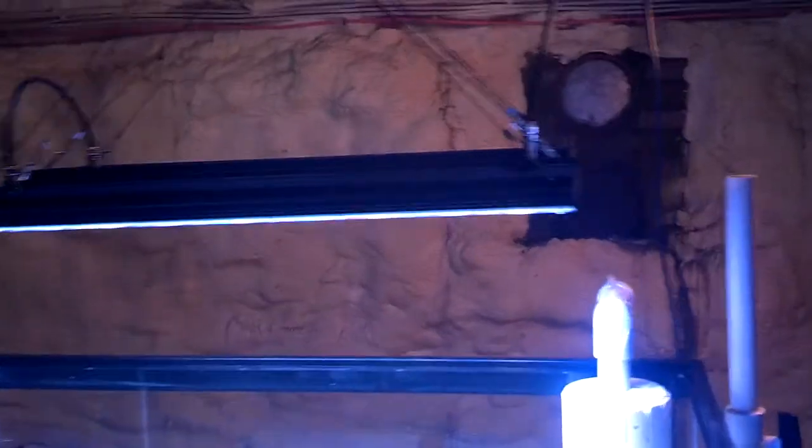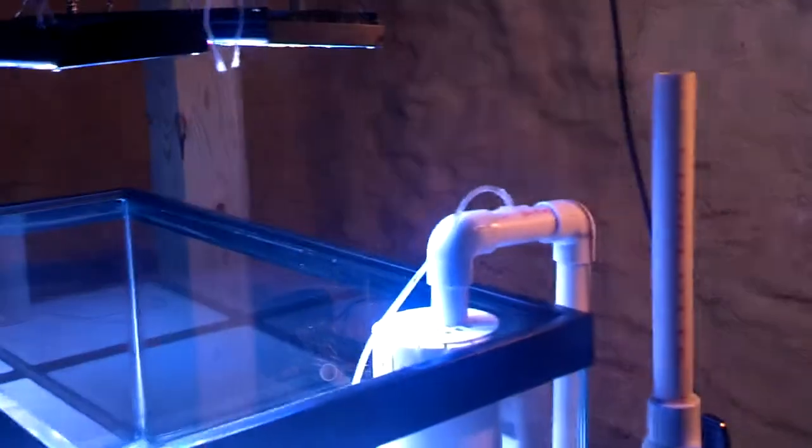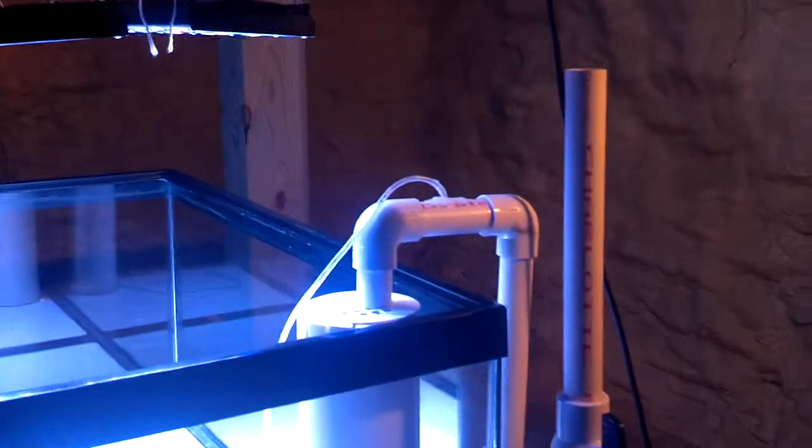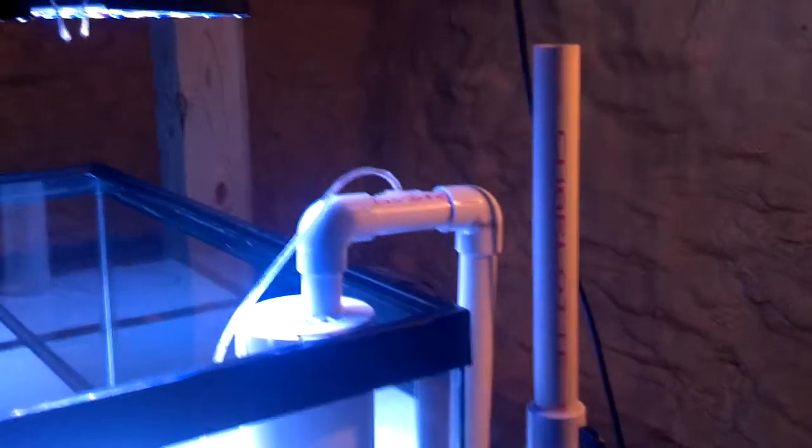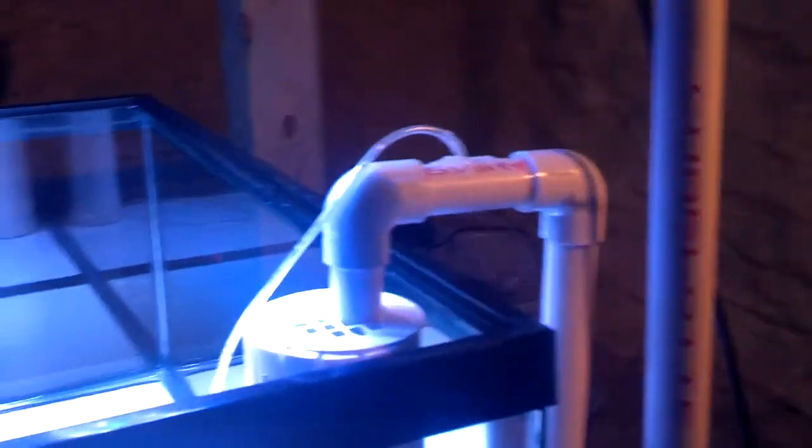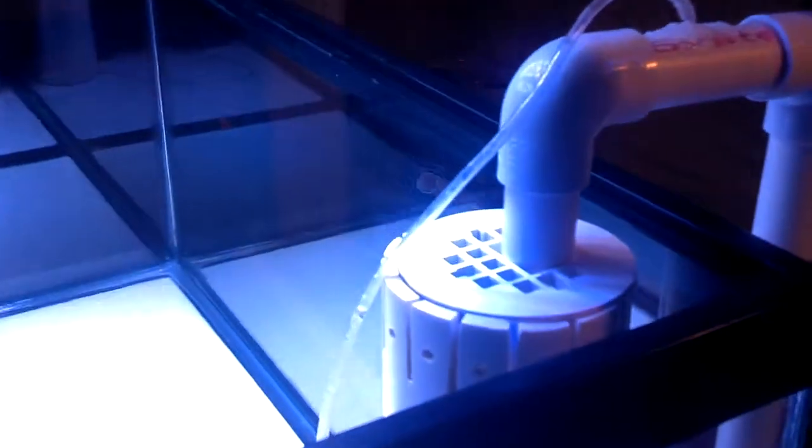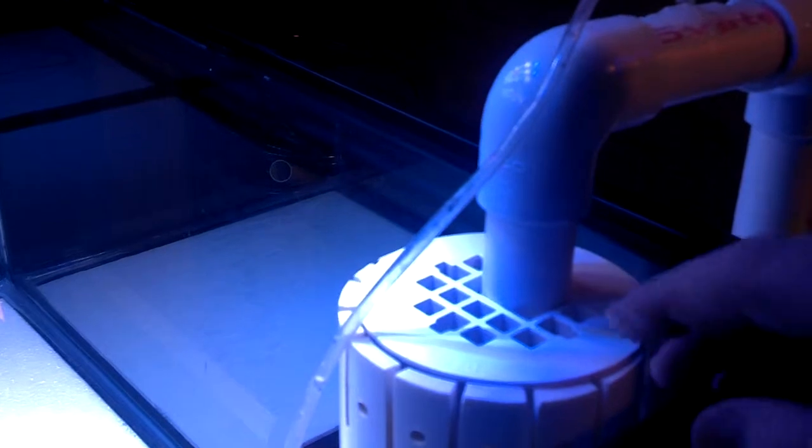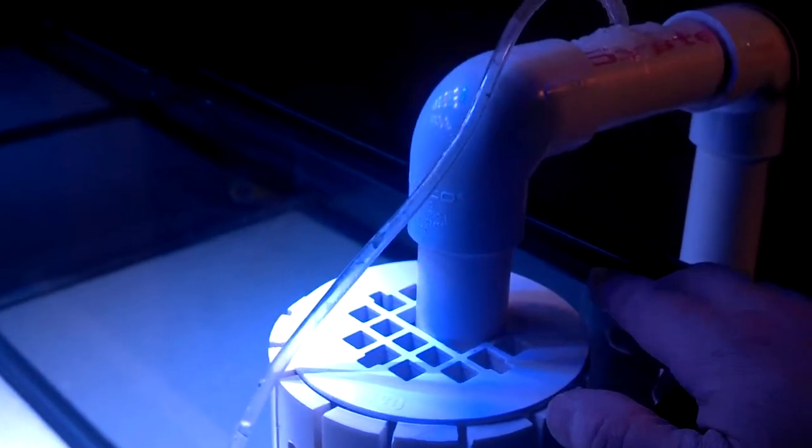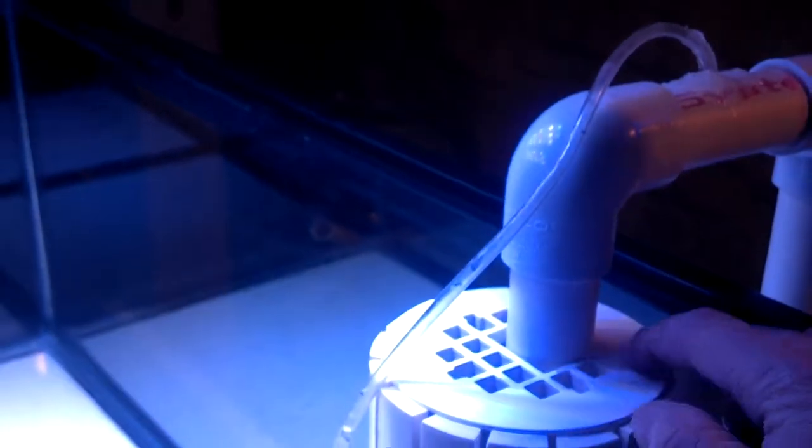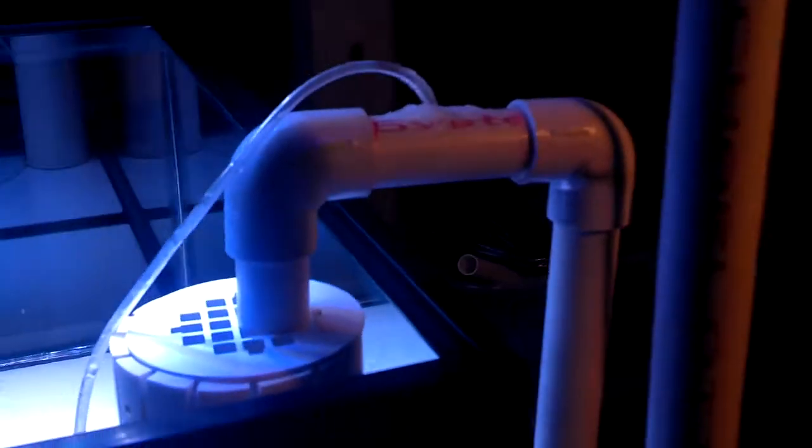Next, what we did was we got our siphon all set up, our plumbing coming out of the tank. We added a drain cap here. This is a one-inch pipe and it's going down through a drain cap so we can keep anything else from going down in there—snails or whatever falling down in there.